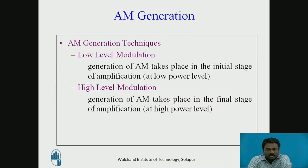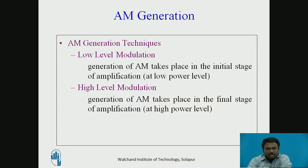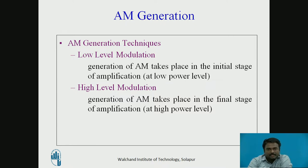There are two types in the generation of AM. First one is the low-level modulation technique, and second one is the high-level modulation technique. In the low-level modulation technique, generation of amplitude modulation takes place in the initial stage of amplification. In the high-level modulation technique, the generation of AM takes place in the final stage of amplification.